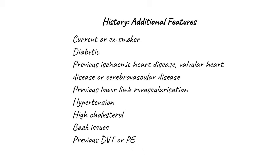Additional features might alert you to the possibility of arterial claudication. You should establish whether they are a current or ex-smoker, whether they are diabetic, whether they have previous ischemic heart disease or interventions for ischemic heart disease, previous lower limb revascularization, high blood pressure, or high cholesterol. It's also worth establishing if they have a history of back issues, as this may raise the possibility of spinal claudication, and a previous history of venous thromboembolism, which might make you reconsider venous claudication.